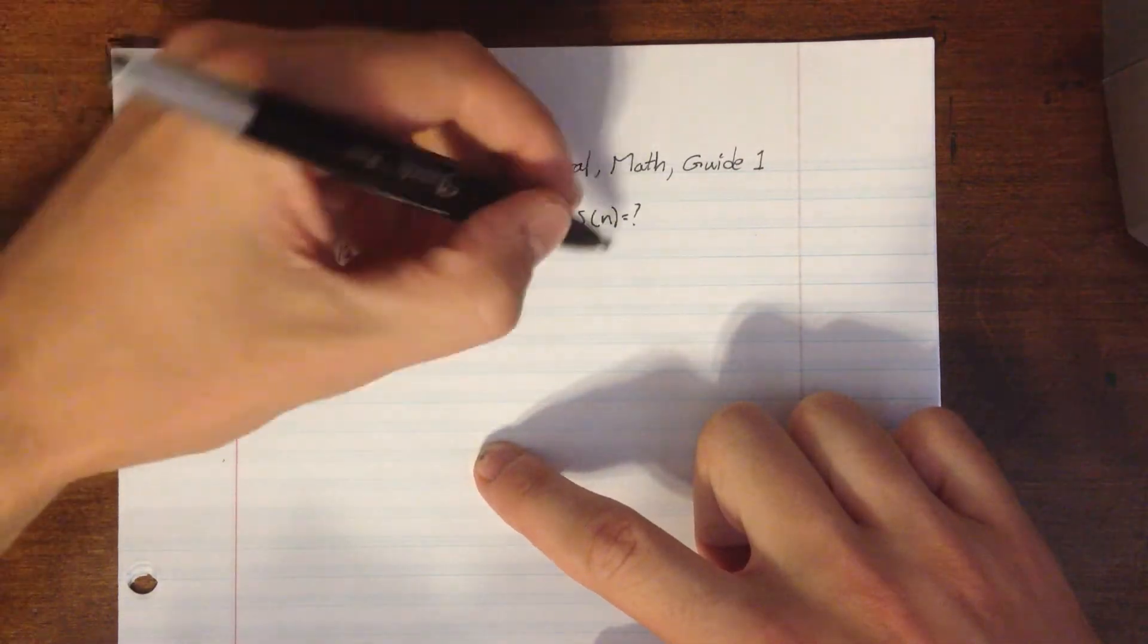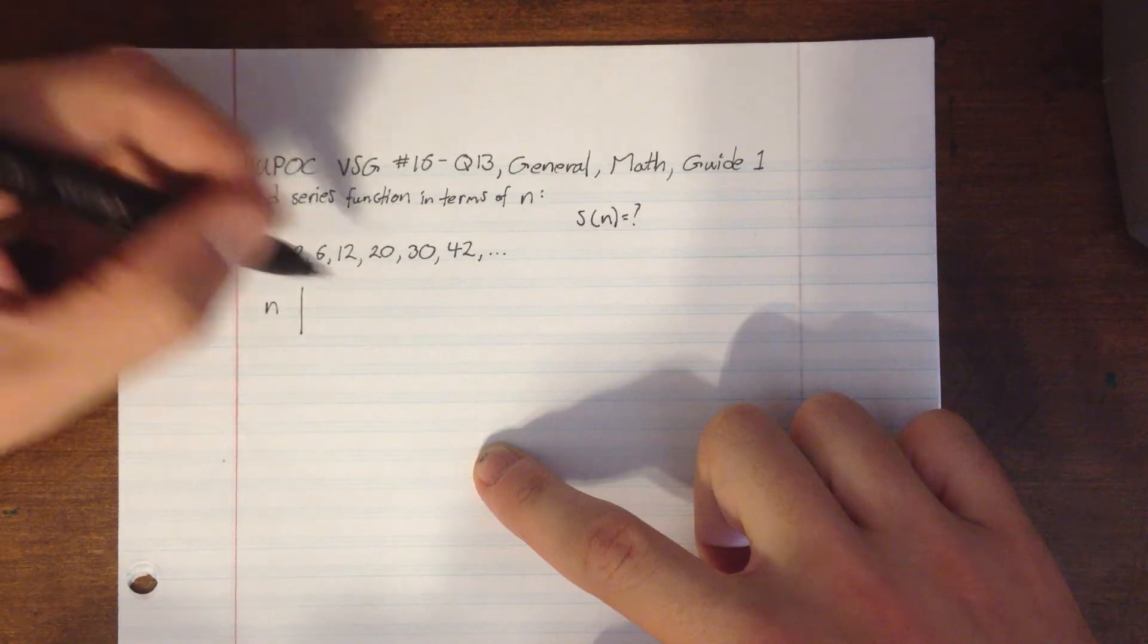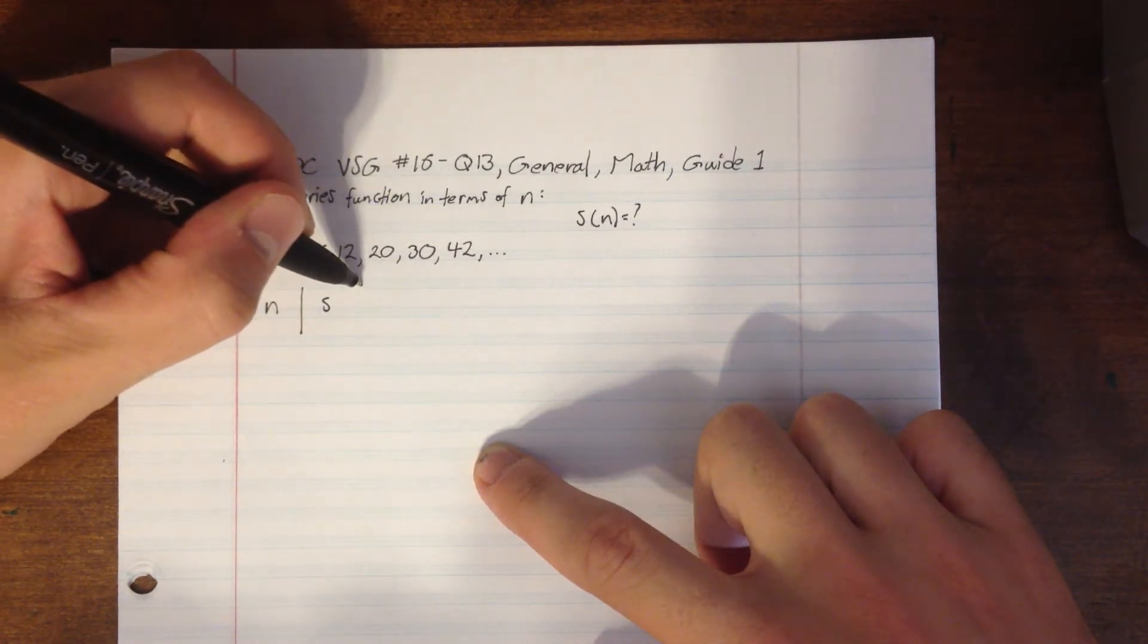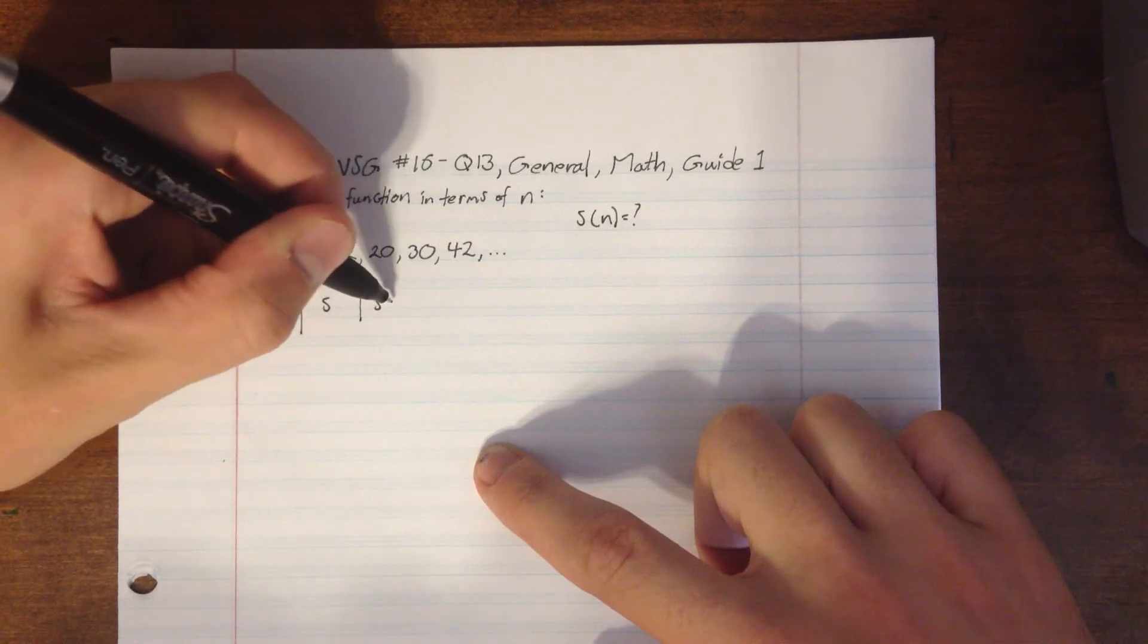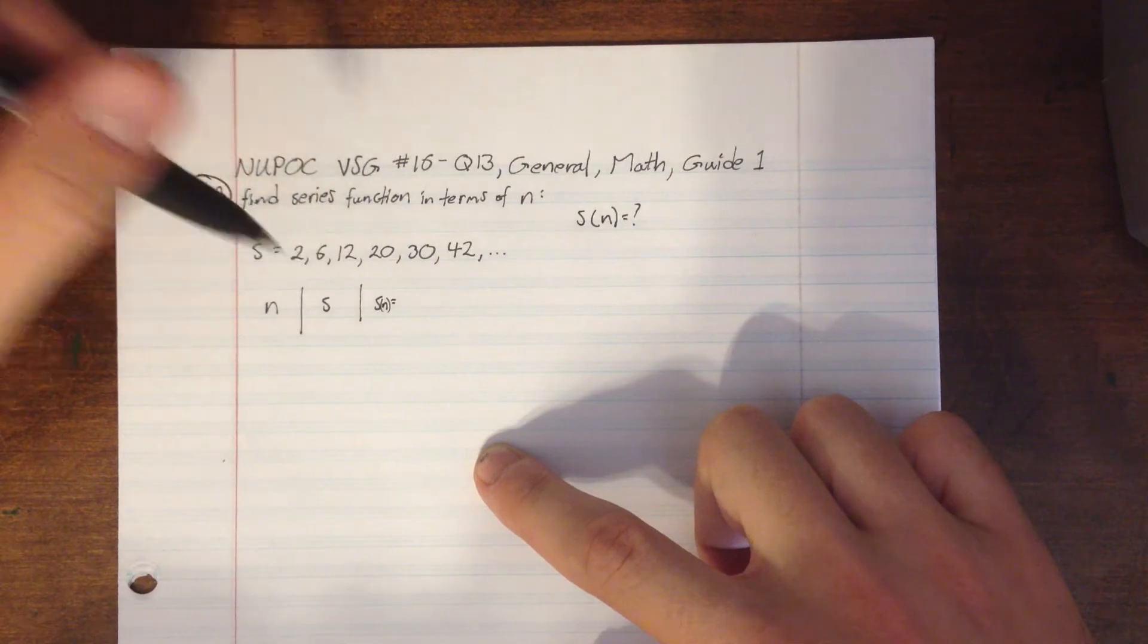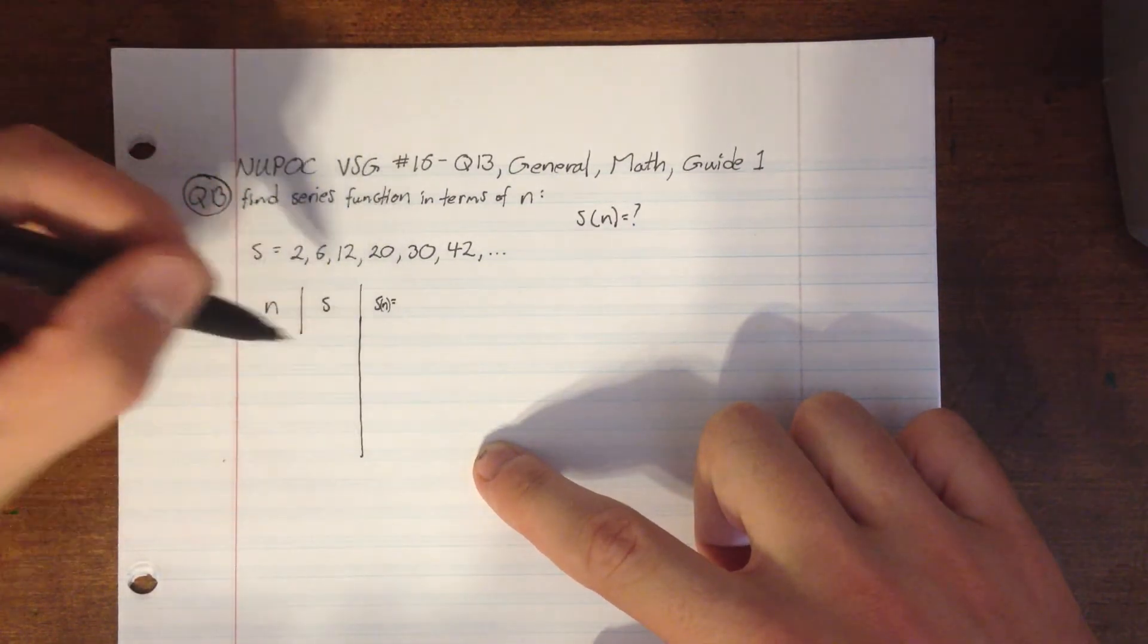Okay, so let's start. We'll just do a quick table over here. So we'll have n and we'll have s and we'll write down what s equals in terms of n as just a first iteration.